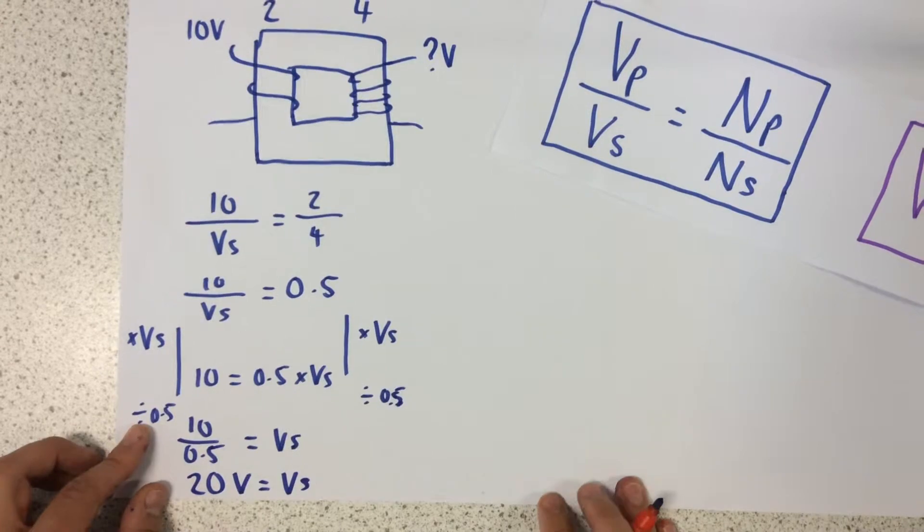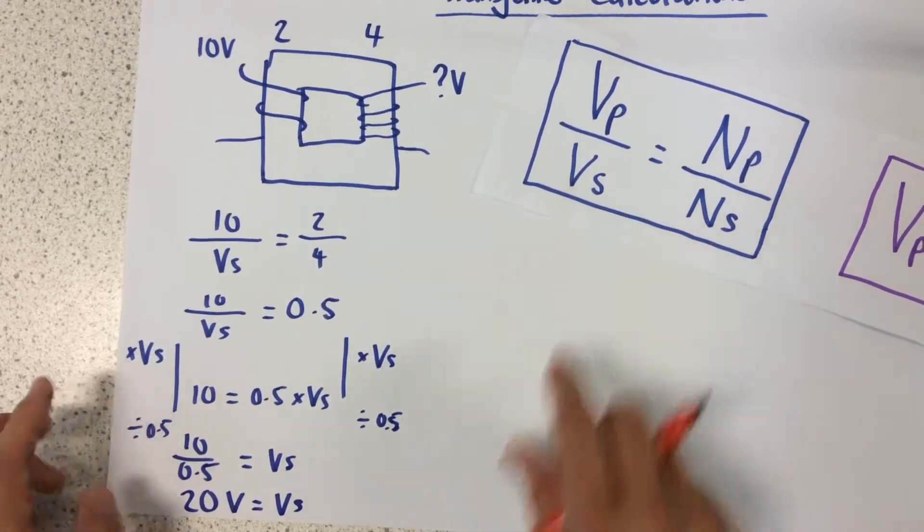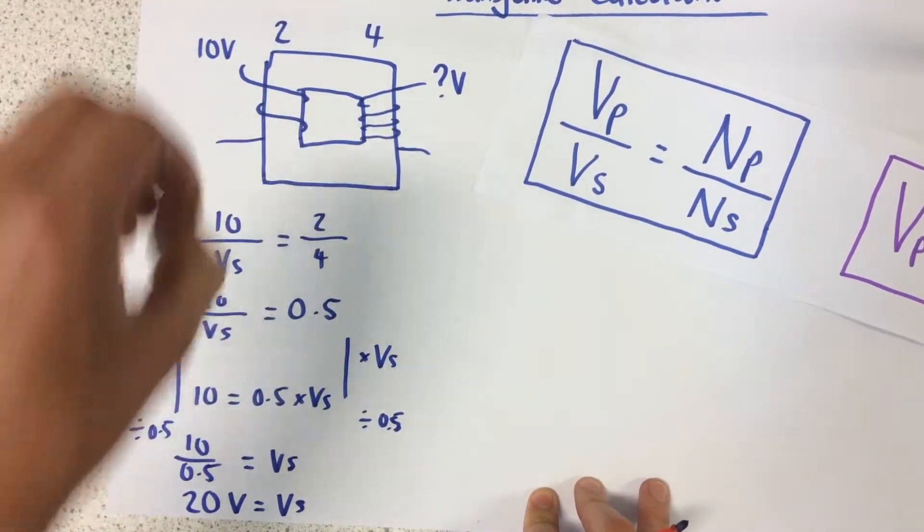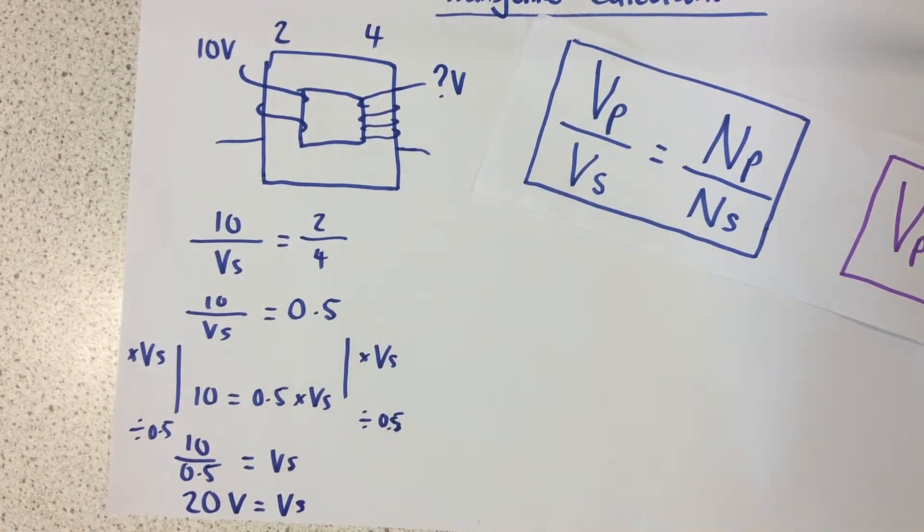So all that I've done there is I've found the equation from the back, I've figured out which one I'm going to use, I've counted the number of turns, and then I've put the numbers into the equation, and I've rearranged.